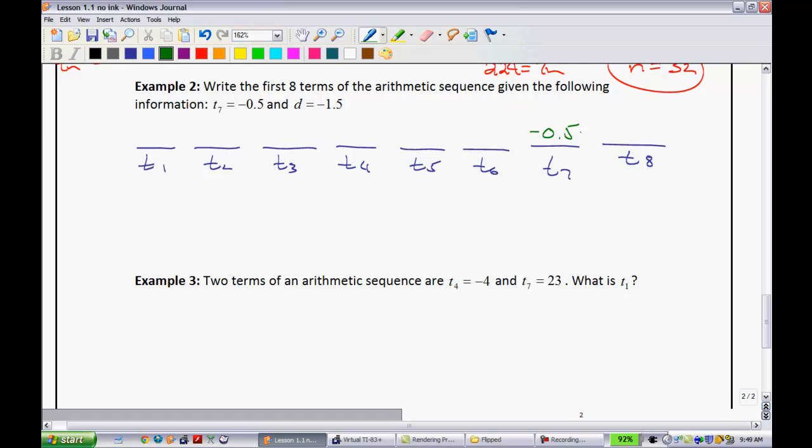So, as it goes in the positive direction, I know the 8th term, I'm going to be subtracting 1.5. So, that means that this would go down 1.5 more, so this would be at negative 2. Well, if it's going downward that way, it must be going upward in the other way. So, if I add 1.5 to negative 0.5, I get 1.